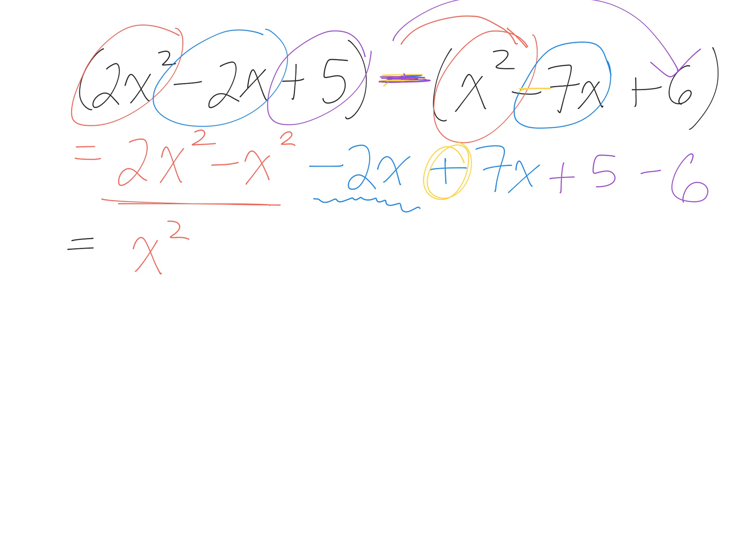Now I have negative 2x, and I'm adding 7x's. What's negative 2 plus 7? Positive or negative? Positive. Positive 5x.